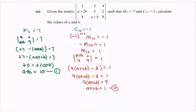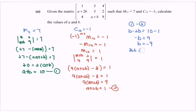So, eliminate A by taking equation 1 minus equation 2. We have B minus 2B equals to 10 minus 1. So negative B equals to 9, therefore B equals to negative 9. Substituting B equals to negative 9 into equation 1, we get A minus 9 equals to 10, so A equals to 19.